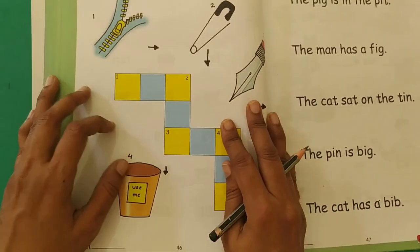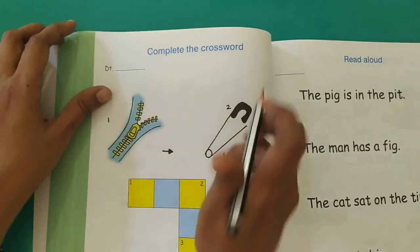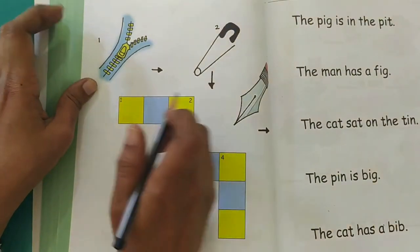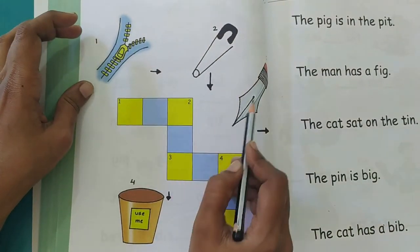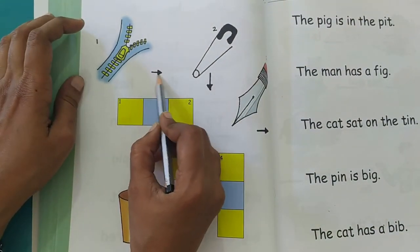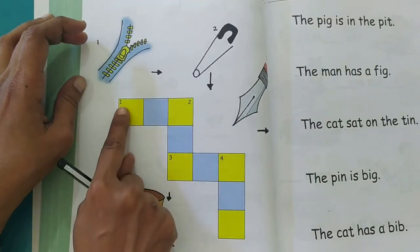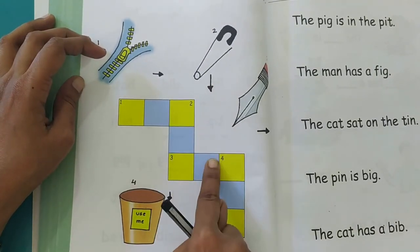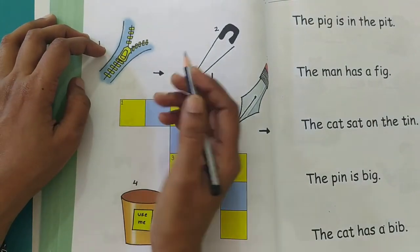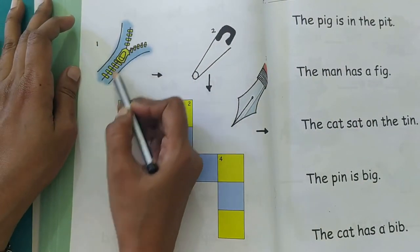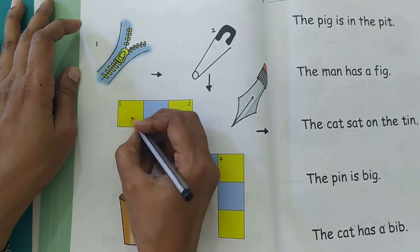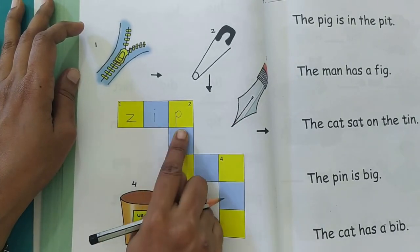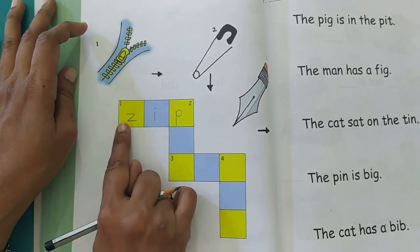Now we will move to the next page, that is on page number 46. Complete the crossword. Now we have done these crossword puzzles earlier. You have the picture clues. And it is showing you the arrow is pointing which direction you have to write the word. Whether you have to write the word in the horizontal position, that is the sleeping line position, or in the vertical, that is the standing line position. This arrow is pointing this way, right? So I will write here.